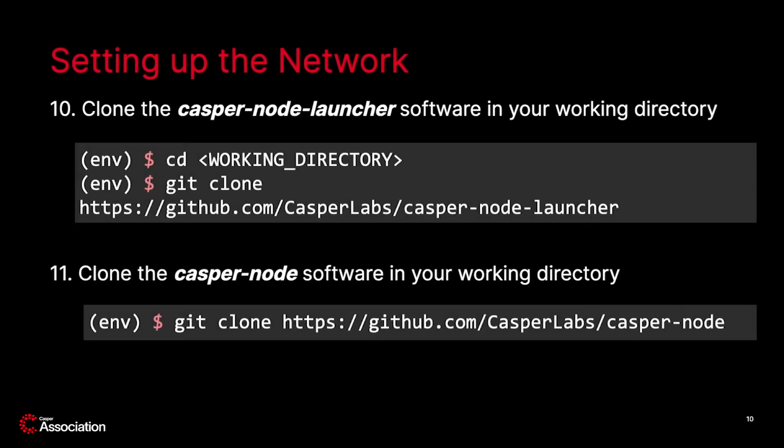You are now ready for setting up and running your local network of Casper nodes. In step 10, clone the Casper node launcher in your working directory. It is very important to choose a short path — otherwise the NCTL tool will report that the path is too long.